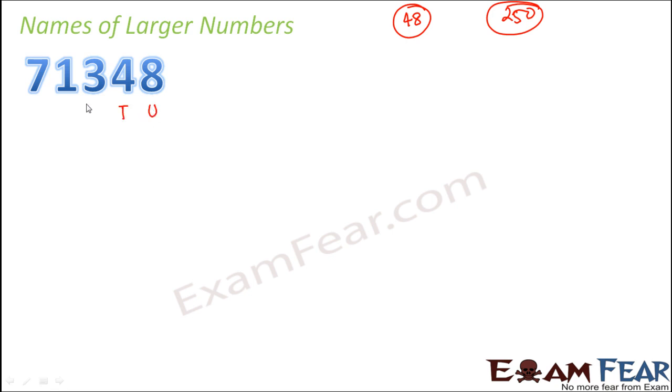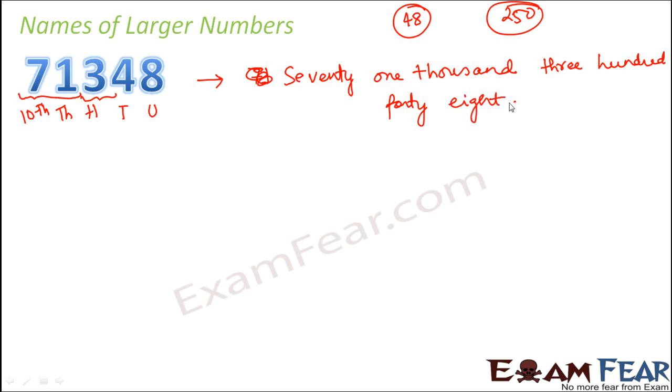So here on the screen, you see an example 71348. So this is at units place 10, hundreds, thousands and 10 thousands. Now once you know this, then it becomes easier to name a number. So what do you have in the thousands place? So you have 7 in 10 thousands and 1 in thousands. So that would mean that it is actually talking about 71,000. And then what do you have in the hundreds place? You have 3. So 71,300 in the tens place 4 which is going to be 48. So overall it is 71,348. So this is how we will name this number.